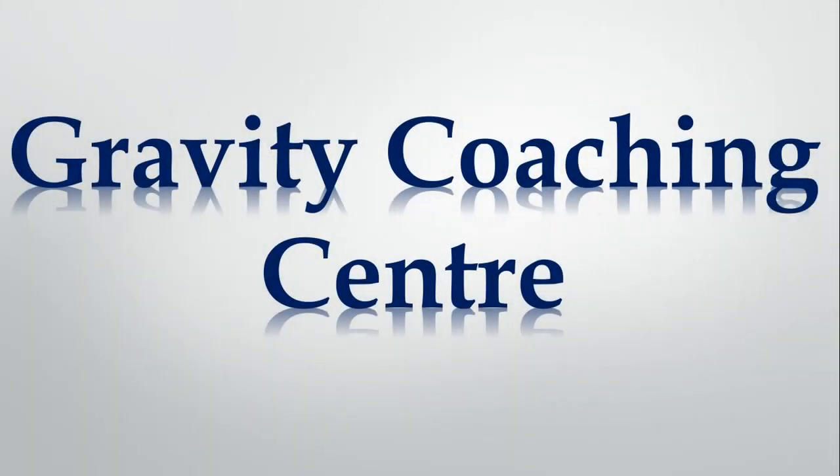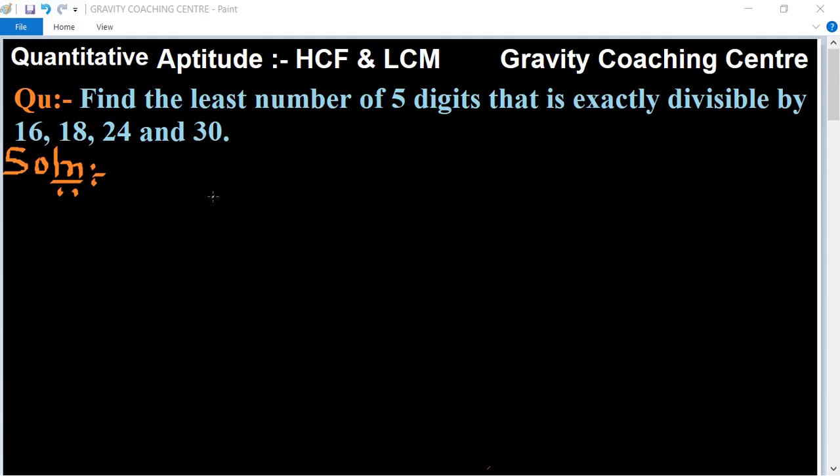Welcome to our channel Gravity Coaching Centre, Quantitative Aptitude, chapter HCF and LCM. Question: Find the least number of five digits that is exactly divisible by 16, 18, 24, and 30.